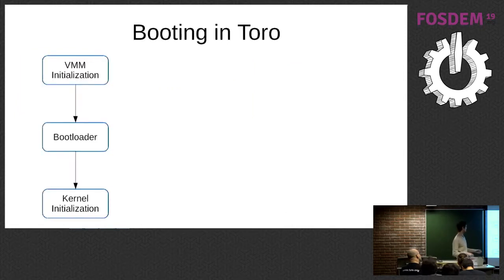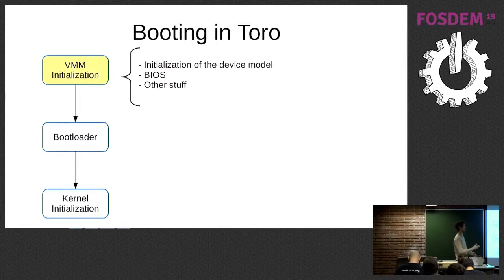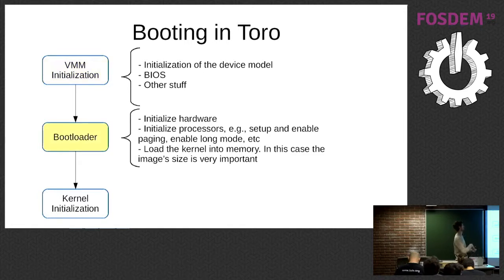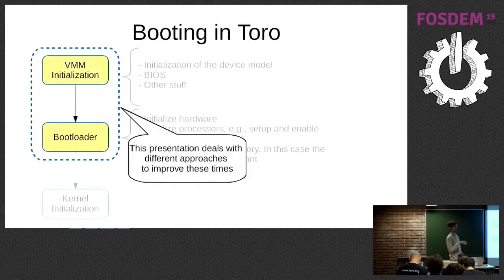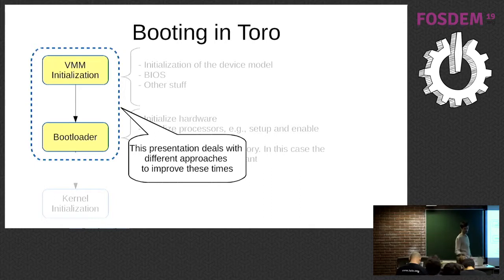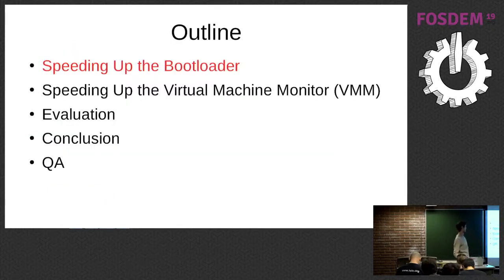So if we see in more detail how the booting process of Toro works, you see: first, the virtual machine monitor initialization, which includes, for example, initialization of the device model, BIOS, and other stuff. Then you have the bootloader that is already part of the kernel, which handles initialization of the virtual machine monitor and most of the hardware — the processor, long mode, paging, reading the kernel from disk, and then putting it in memory. This talk only covers the work I did on these two first steps, and in the next slide I will talk about how we tried to improve this time.